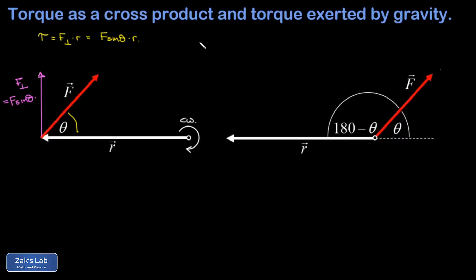Instead of calling the torque f-perpendicular times r and having to give its direction as clockwise or counterclockwise, we give a vector definition of torque as r cross f, where r is the vector pointing from the rotation axis to the point where the force is applied.